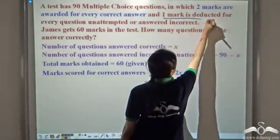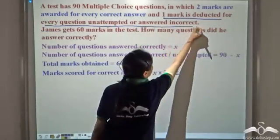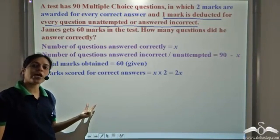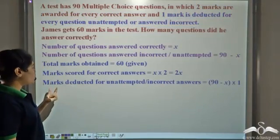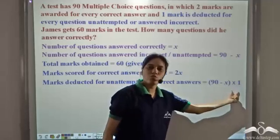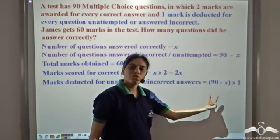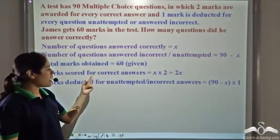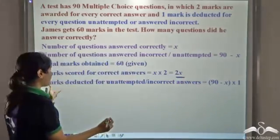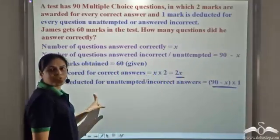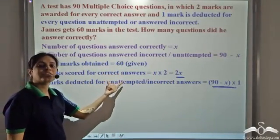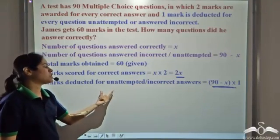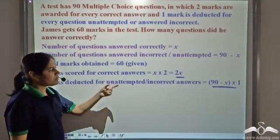Now 1 mark is deducted for every question unattempted or answered incorrect. So total marks deducted will be (90 minus x) into 1, which is equal to 90 minus x. Now marks obtained by James will be marks scored minus marks deducted. He gets 2x from correct answers and loses (90 minus x) from incorrect or unattempted questions.